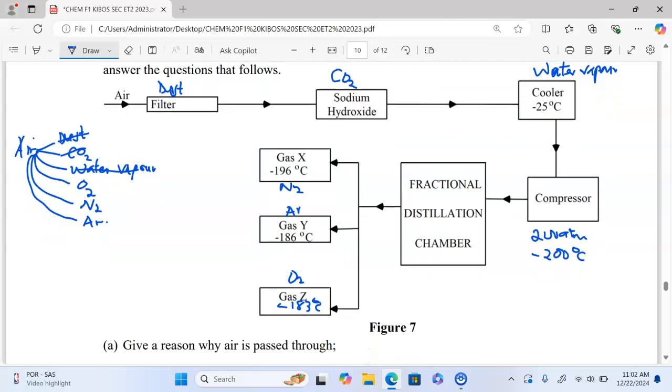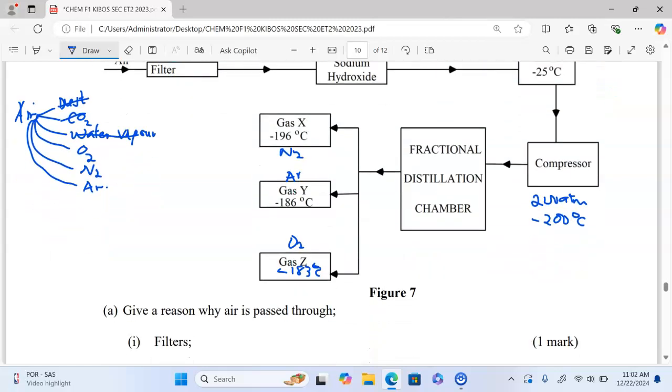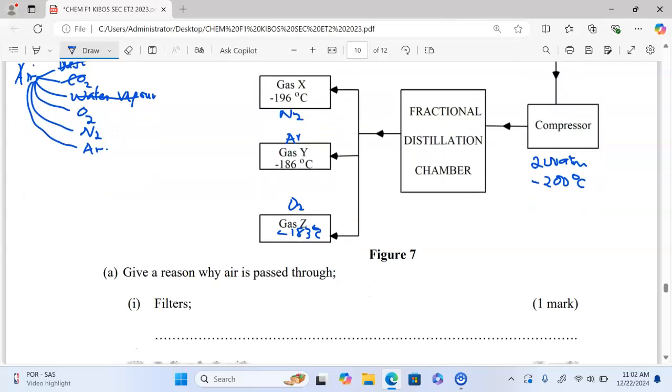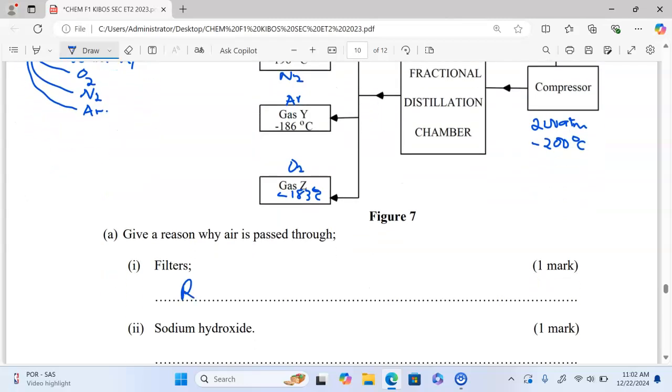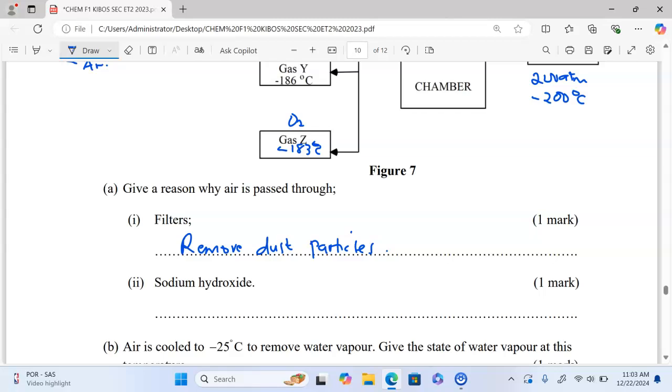We can now move and answer the questions. Part A: Give a reason why air is passed through filters. This is to remove dust particles. Part B, Roman 2: Why is it passed through sodium hydroxide? This is to remove carbon dioxide.